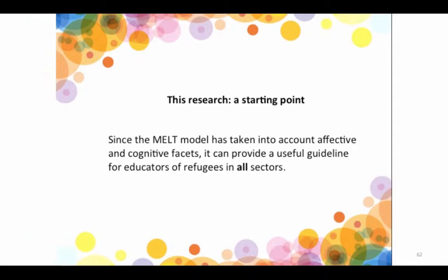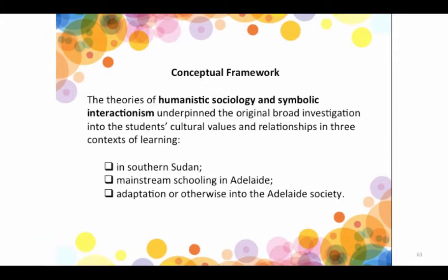The two theories we used were, first, humanistic sociology, which concentrates on cultural values — looking at the educational, social, religious, linguistic, and sense of identity dimensions. This seemed to be a perfect choice for an underpinning theory. Secondly, symbolic interactionism deals with social interaction and examining relationships — significant relationships with a family member or teacher, and generalised relationships within a group like a classroom.